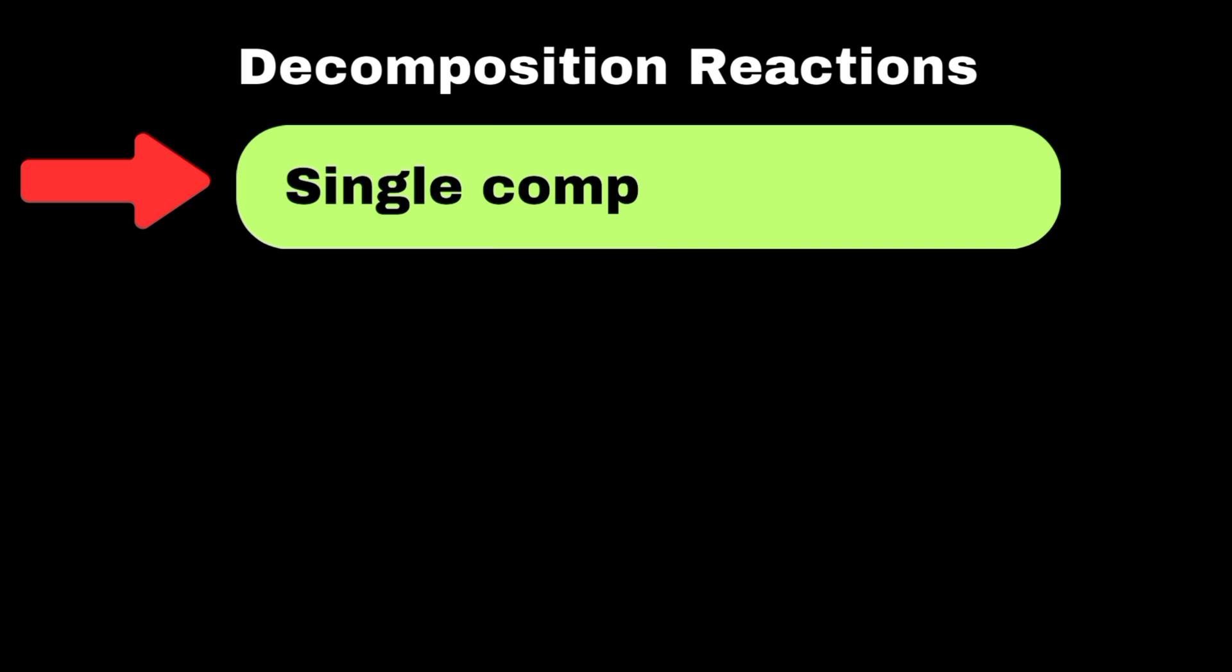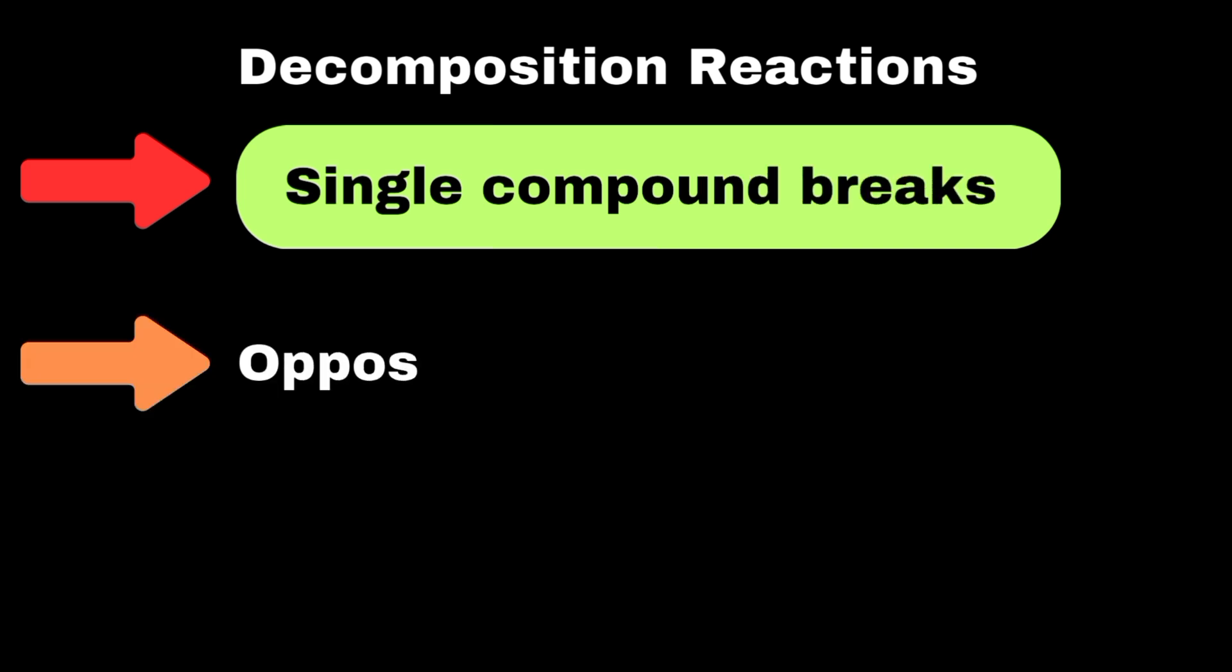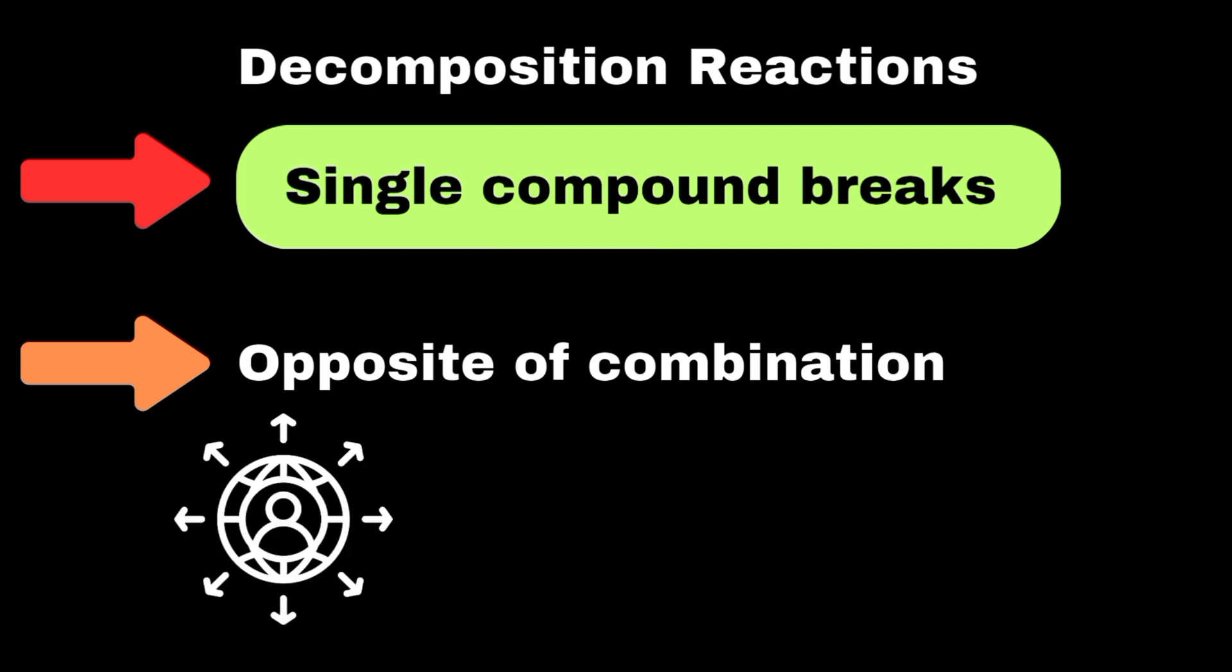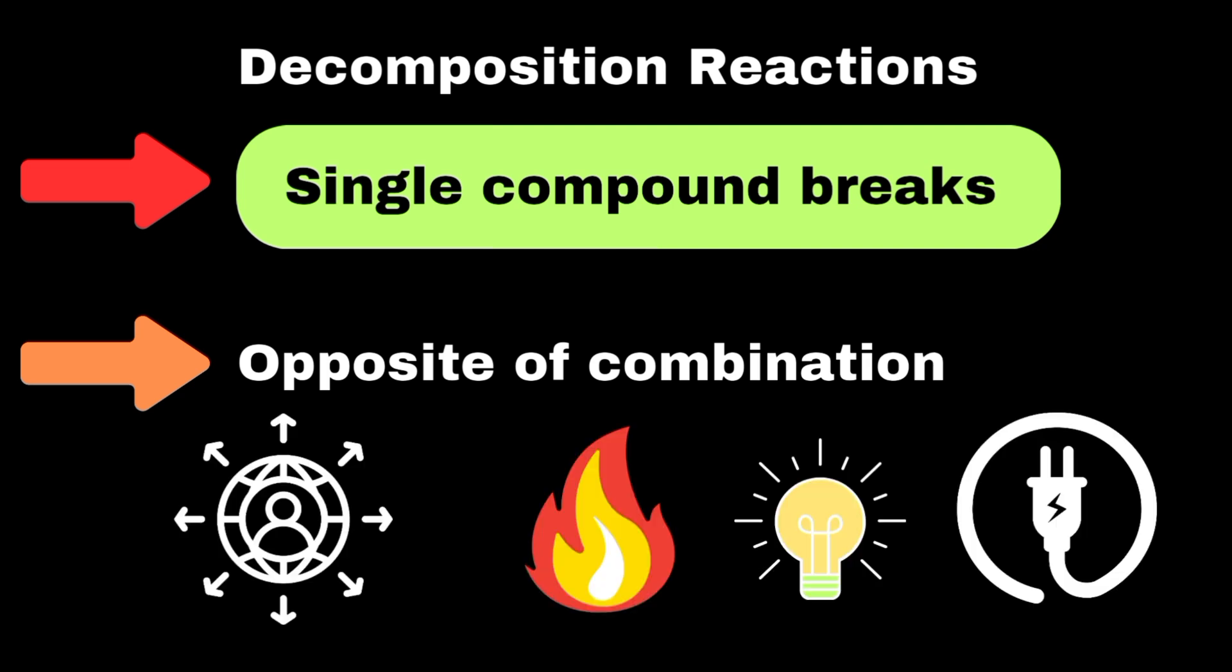Now let's move towards decomposition reactions. In a decomposition reaction, a single compound breaks down into two or more simpler substances. This type of reaction is the opposite of a combination reaction. Decomposition often requires an external source of energy, such as heat, light, or electricity.